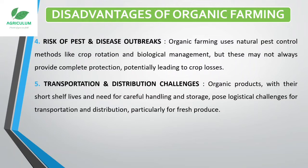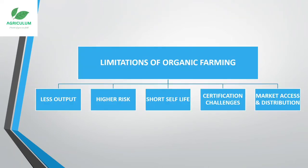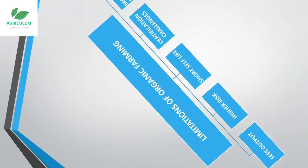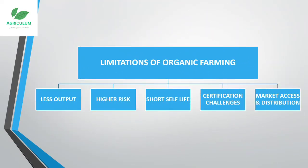Now let's see the limitations of organic farming. These include: less output, higher risk, short shelf life, certification challenges, market access, and distribution challenges.